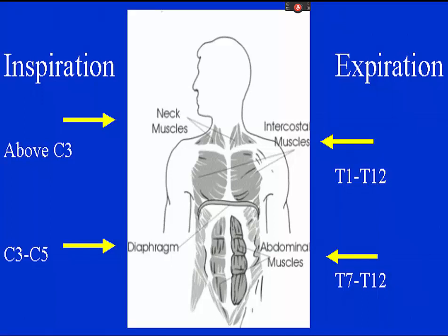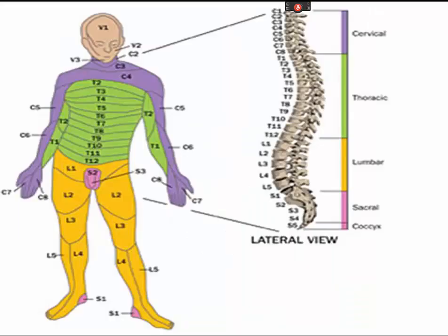Many people with a C4 level of injury, and even some with C3, can eventually breathe without the aid of a ventilator or may only need it for part-time assistance. Those with complete injuries above C3 need a ventilator for full-time assistance. Individuals with injuries below T12 do not lose any control of the respiratory muscle groups, meaning the respiratory system is usually not affected by lumbar or sacral injuries.